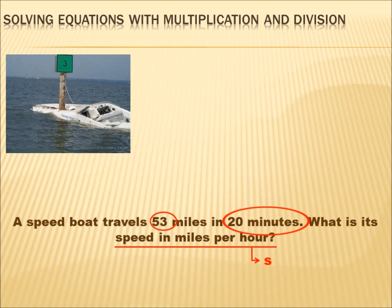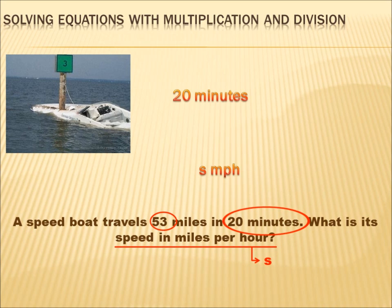I've circled 53 and 20 minutes, and I underlined the question: what is the speed in miles per hour? So now we really only have to look at three things. We've got S, which is the speed in miles per hour. We've got 53, which is the miles that were traveled. And we've got 20 minutes, which is the amount of time the speedboat was traveling. We've got an equation, because we're going to solve for something.